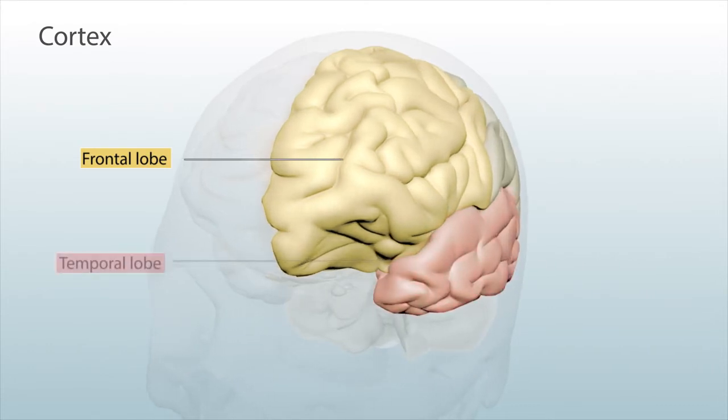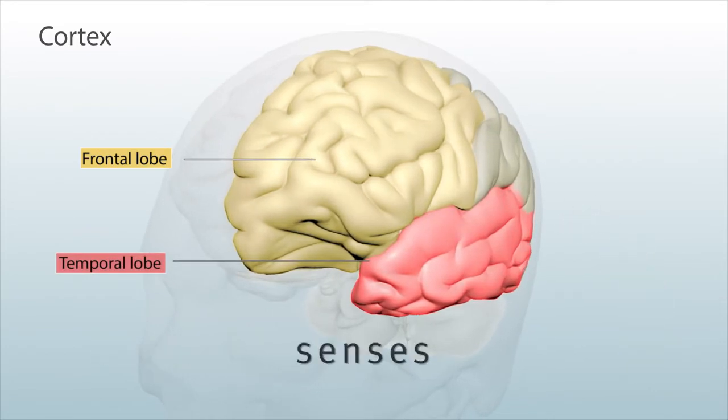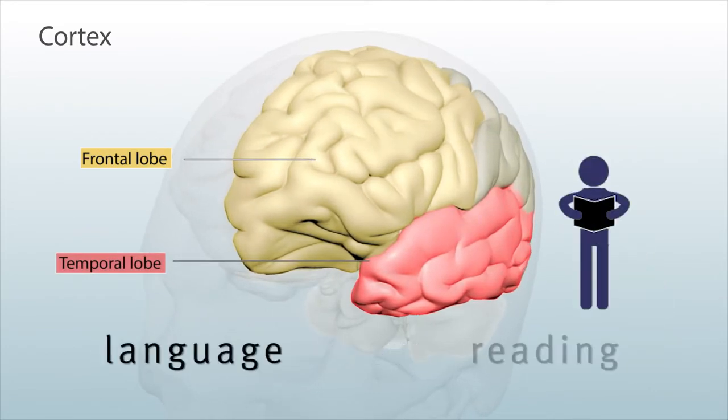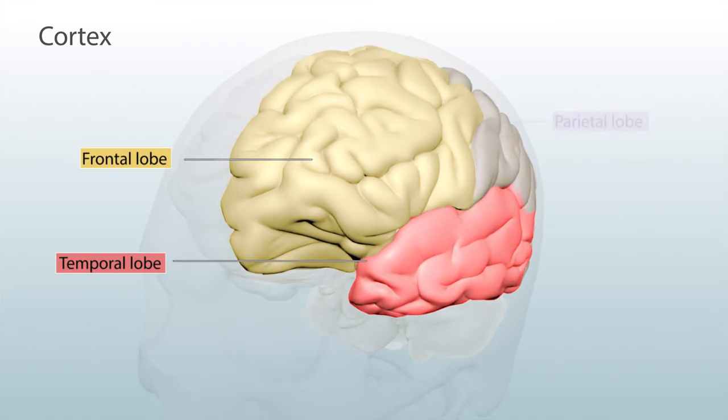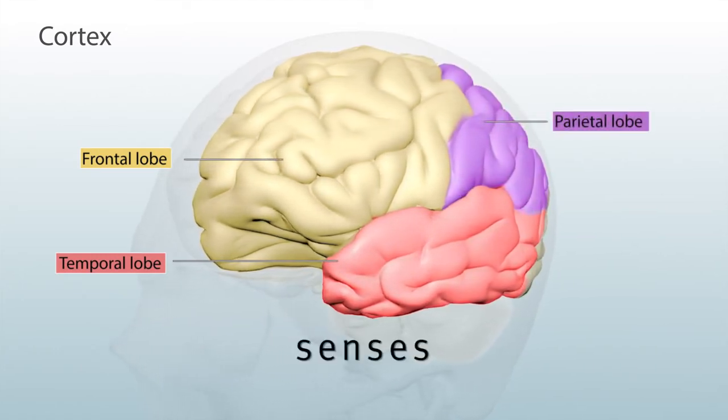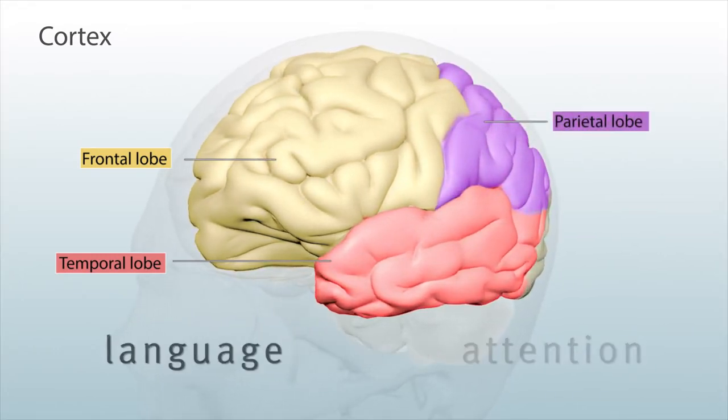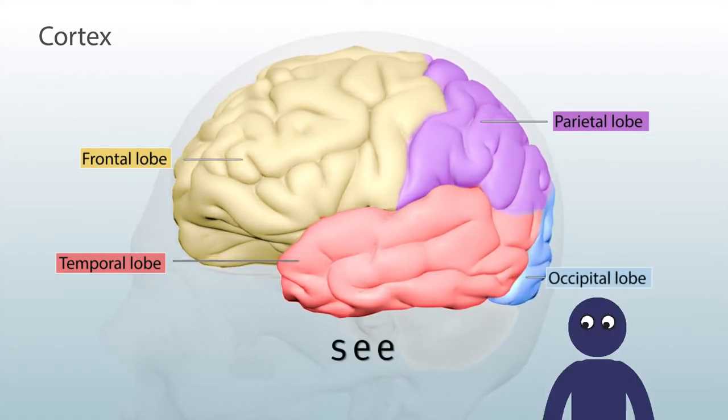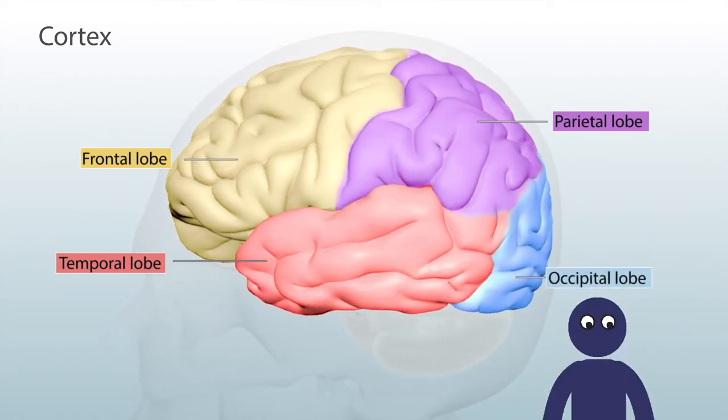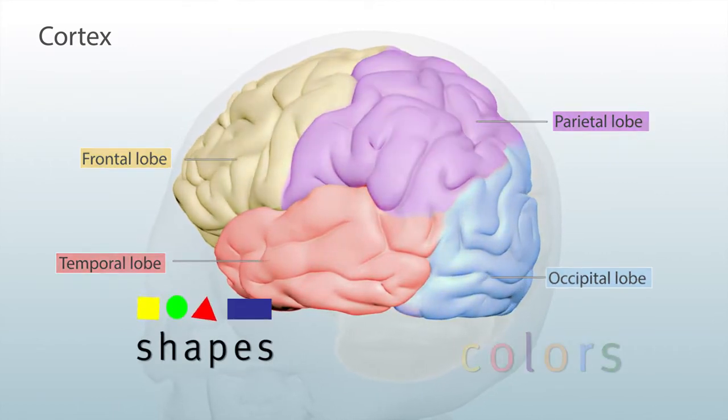The temporal lobe helps process your hearing and other senses, and helps with language and reading. The parietal lobe is involved with your senses, attention, and language. The occipital lobe helps your eyes see, including recognition of shapes and colors.